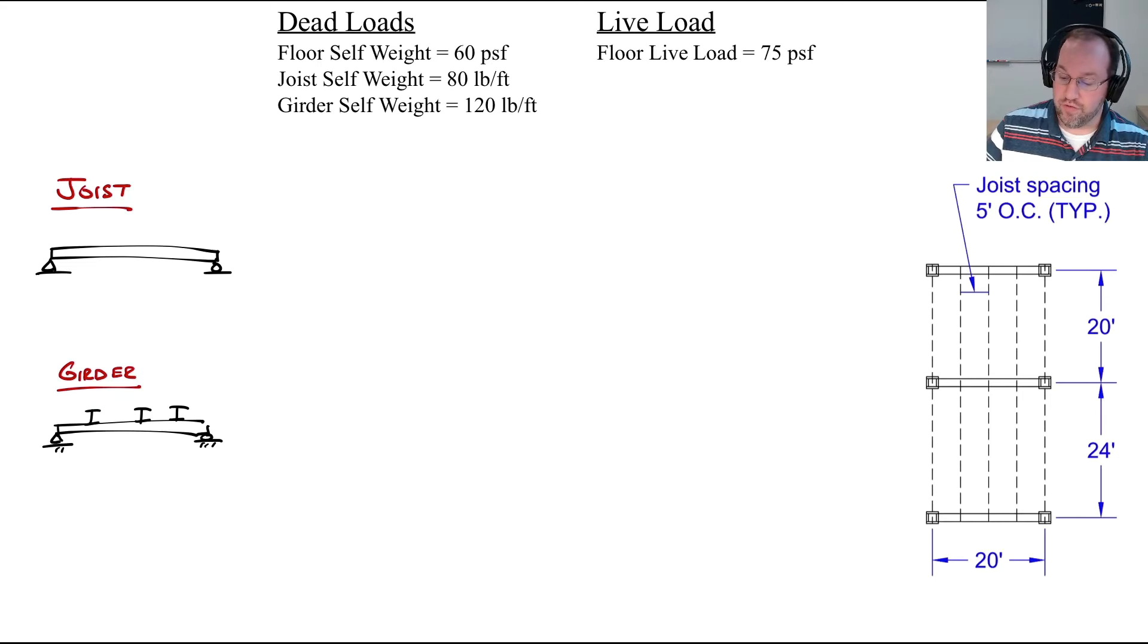Let's look at our joist first. For the dead load it carries itself, so its own self-weight is 80 pounds per foot, plus it carries some floor at 60 pounds per square foot. I need to know how much floor it's carrying. Looking at my tributary area for a typical joist, it's going to collect load over a width of five feet. So my dead load is 60 pounds per square foot multiplied by a five foot width of floor. Taking all that together we have 380 pounds per foot.